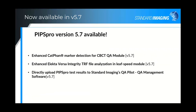We recently released version 5.7 with several enhancements: improved marker detection in the cone beam CT module for more accurate and easier key slice localization, enhanced Elekta Versa Integrity TRF file analysis for the leaf speed module, and direct upload from PIPs Pro into QA Pilot, giving you a full package covering all TG142 tests.